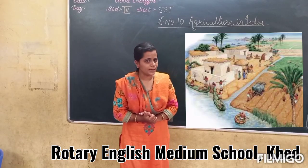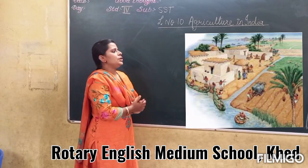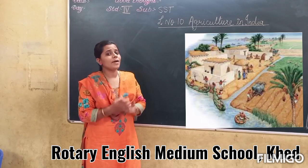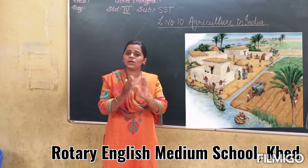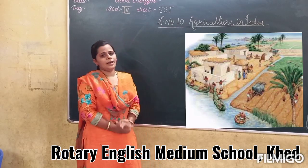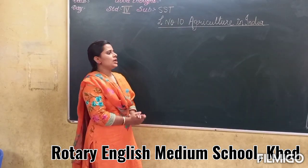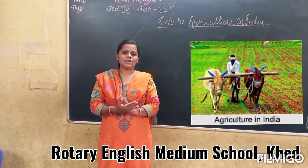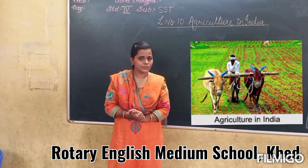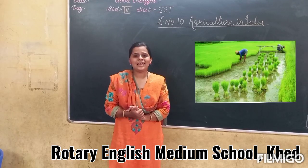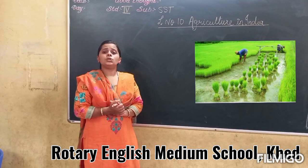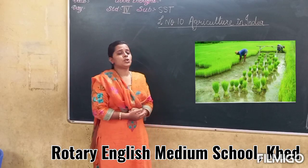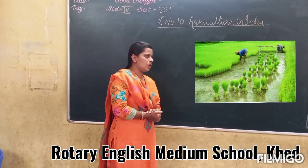Agriculture allows early humans to lead a settled life. India is known as an agricultural country. Most of the people are engaged in agriculture — two-thirds of the Indian population are involved in the occupation of agriculture.